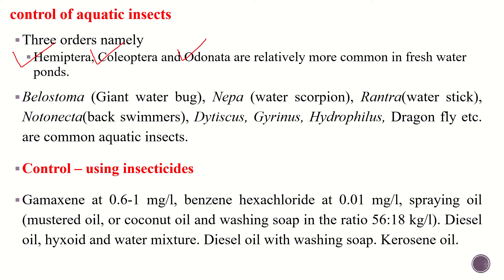Water bugs of order Hemiptera are relatively more dangerous. Some aquatic insects like Belostoma, which is called the giant water bug; Nepa, which is called the water scorpion; Ranatra, which is called the water stick; Notonecta, commonly called back swimmers; and Gerris, the water spider — these are harmful insects belonging to order Hemiptera found in freshwater ponds.